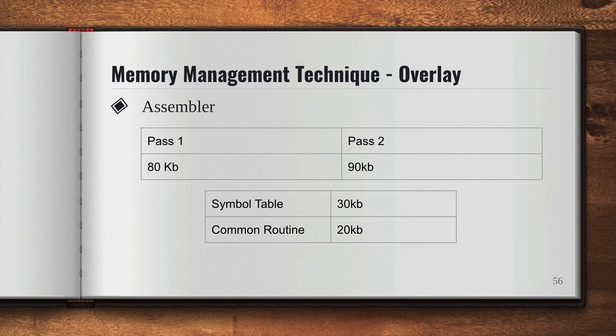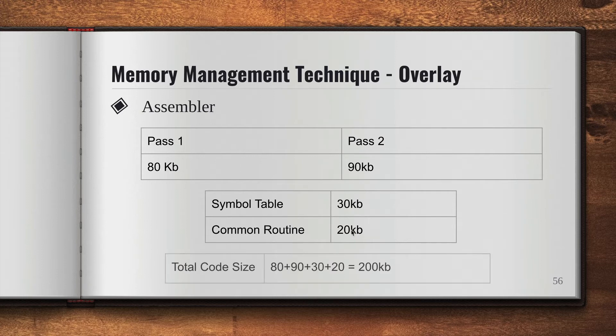We must have a symbol table which has the size of 30 KB, and we also must have a common routine for both passes which is 20 KB. Let's say we have a main memory size of 150 KB. If we try to run both programs, pass one and pass two, what will be the total? 80 plus 90 plus 30 plus 20 - that comes to 200 KB.